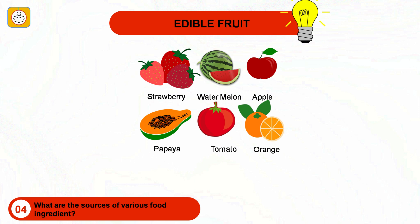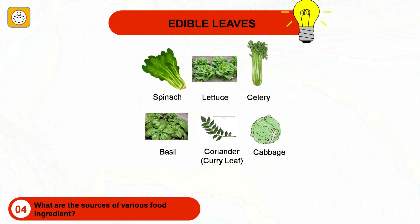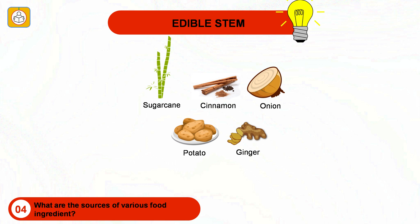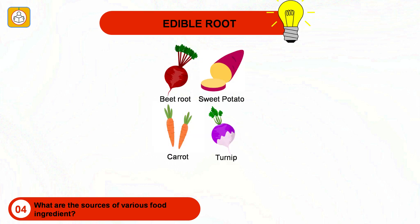The sweet and fleshy product of a tree or plant that contains seed is called a fruit. Fruits include strawberry, watermelon, apple, papaya, tomato and orange. Edible leaves include spinach, lettuce, celery, basil and coriander. Sugar cane is an edible stem — its inner stem's sap is a source of sugar. Cinnamon is another edible stem. Onion, potato and ginger are common underground stems. Root vegetables include beetroot, sweet potato, carrot and turnip.